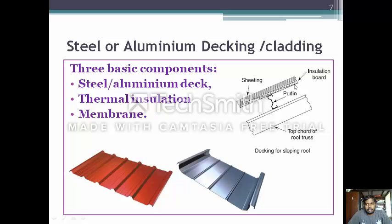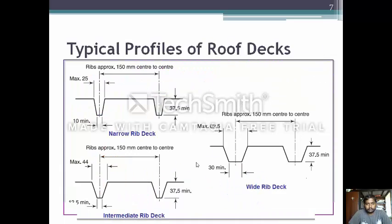The sheeting and insulated board with purlin connects both top chords of the roof truss. This is an example of aluminum sheet of different colors. The typical profiles of roof decks include narrow, wide, and intermediate roof deck.